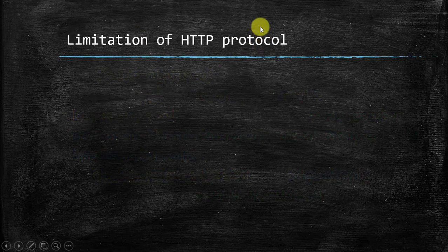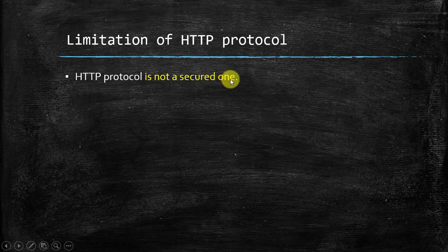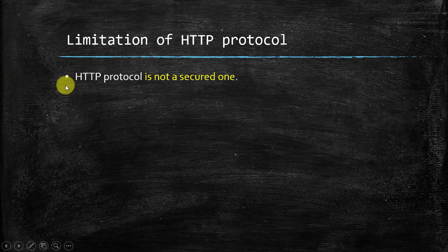Now let's see the limitations of HTTP protocol. There are three different types of limitations. The first limitation is that HTTP protocol is not a secured one. Whenever we want to send any sensitive information, we cannot use HTTP protocol. For sending sensitive information, we can use HTTPS, because HTTPS is a secure protocol, whereas plain HTTP is not secure.